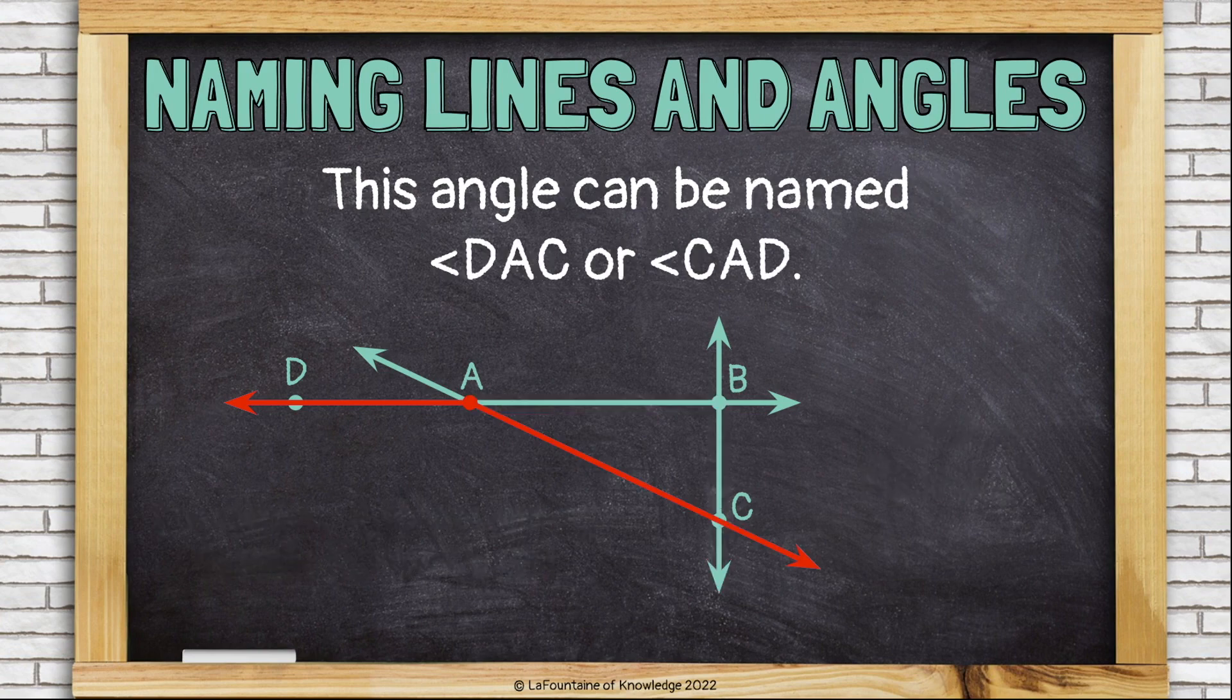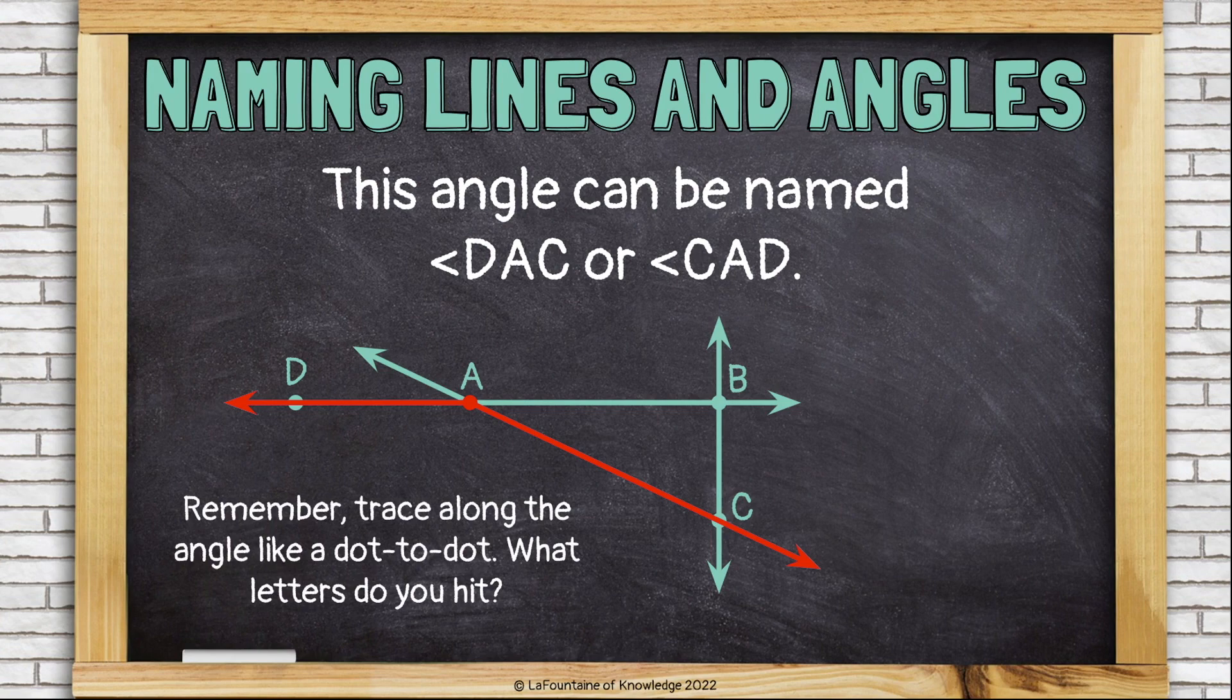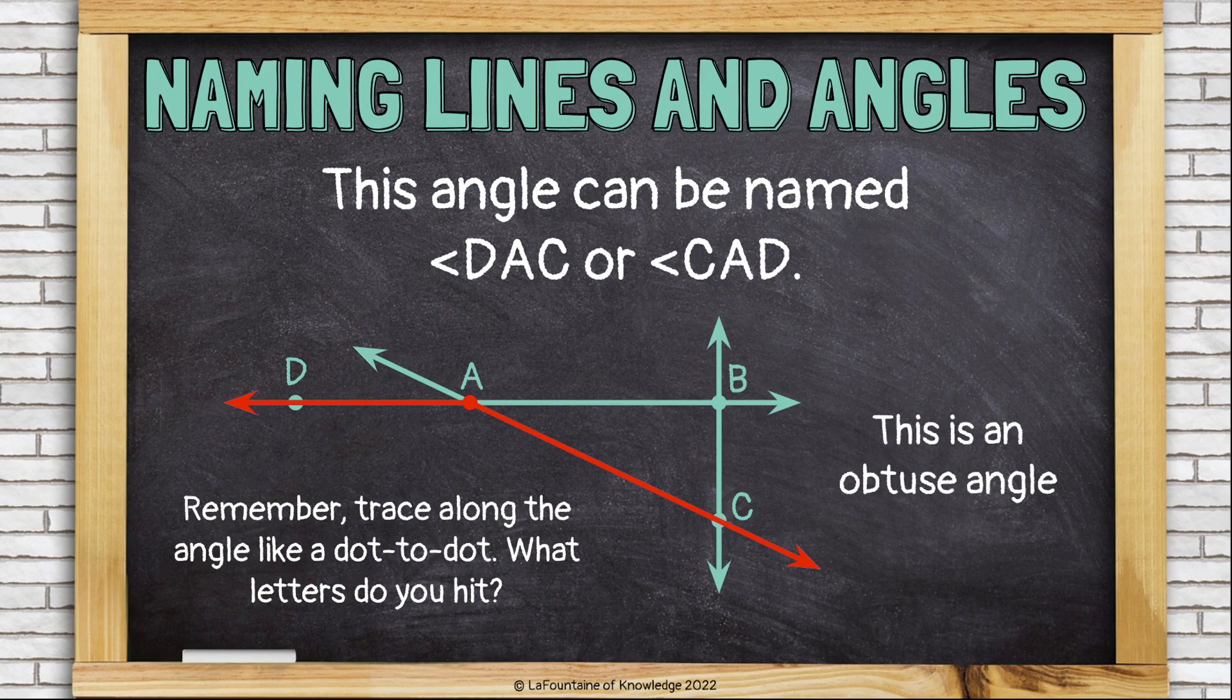This angle can be named DAC or CAD. Remember, trace along the angle like a dot-to-dot. What letters do you hit? This is an obtuse angle.